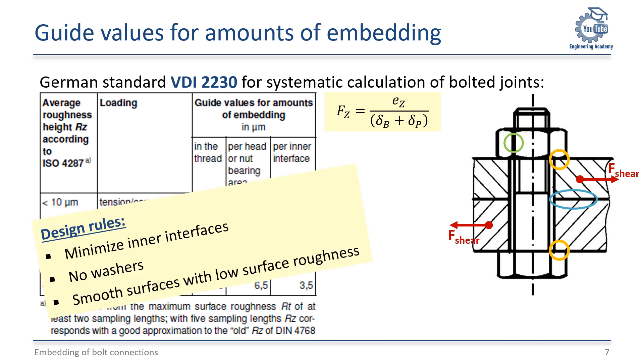Based on these correlations, the following design rules can be derived: Minimize the number of inner interfaces. Try to avoid any washers. And ensure smooth surfaces with low surface roughness.